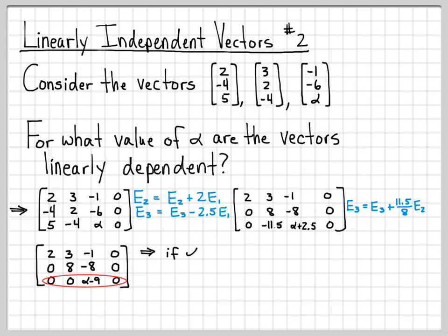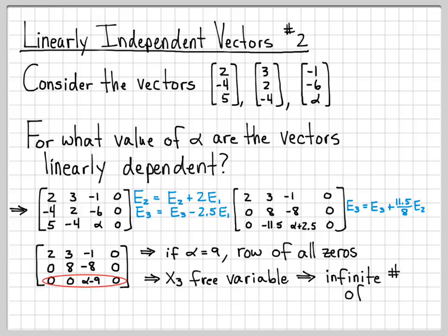If I was to have alpha equals to 9, then I would have a row of all zeros. We know what happens when we end up having a row of all zeros. We end up with a solution to our system of linear equations that has a free variable. So if I have a row of all zeros here, I'm going to end up with x3 as a free variable.